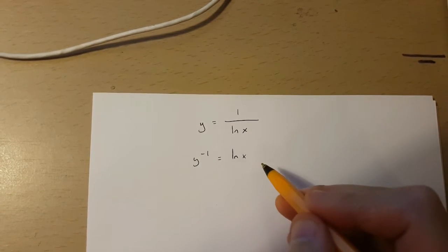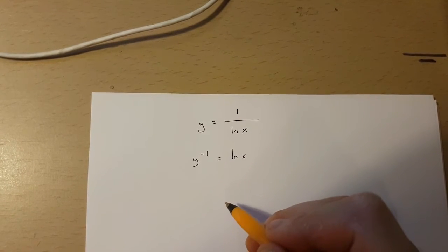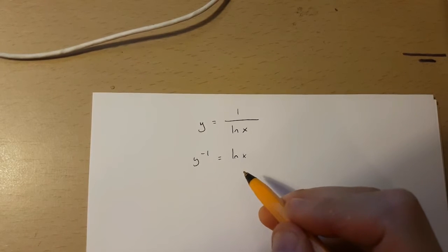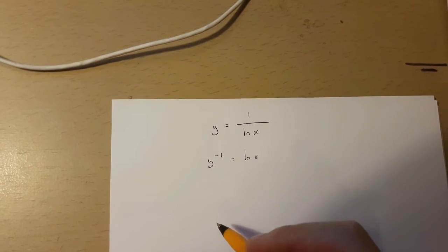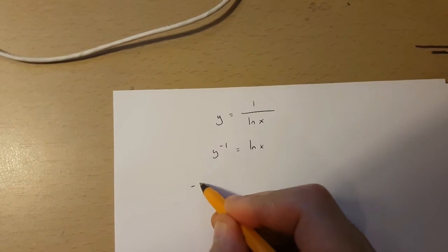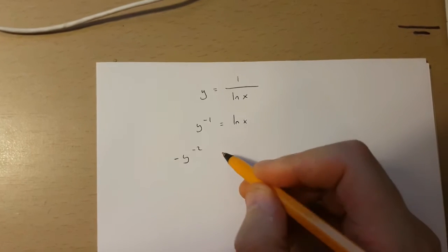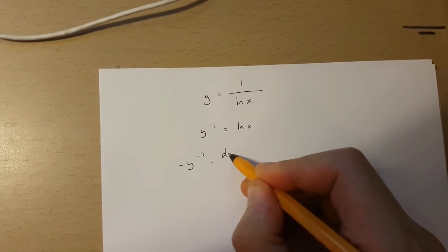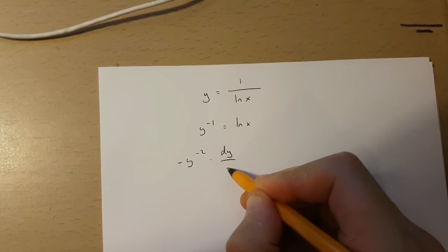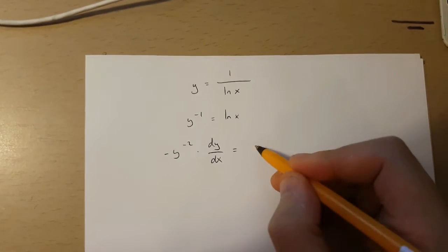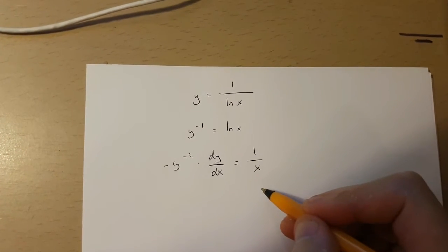From here, I'm going to use implicit differentiation to get dy over dx. This gives minus y to the power of minus 2 times dy over dx equals 1 over x.